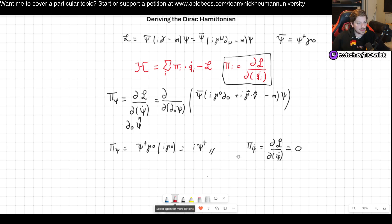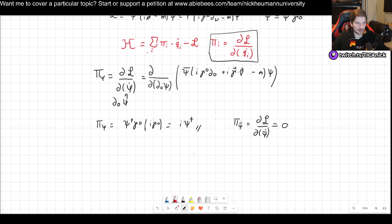Good. Now we can plug this into our Hamiltonian, or rather the formula for the Hamiltonian density that we have for now. So this would be, we have to sum over the conjugate momentum multiplied by the qi dots. So that would be pi psi times psi dot plus pi psi bar dot psi bar dot minus the Lagrangian.